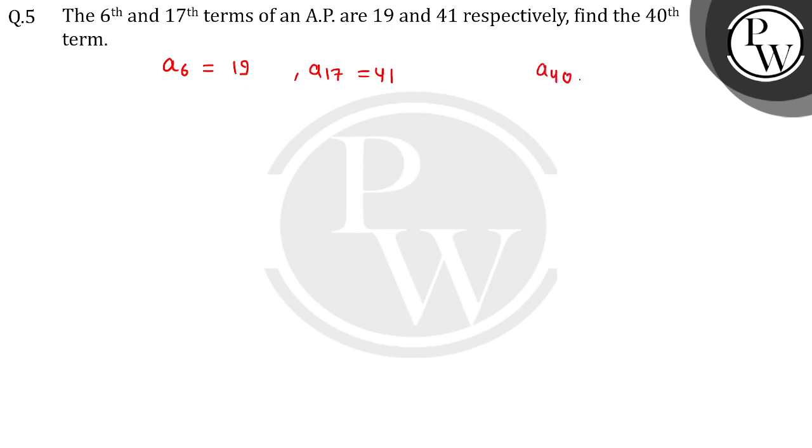So we have A and D. Where will we find A and D? A6 and A17. A6 is going to be A plus 6 minus 1 into D. So A plus 5D is 19. Similarly here A plus 17 minus 1 into D is 41. A plus 16D equals 41.